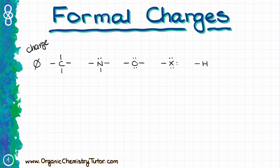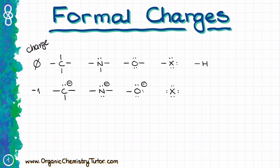In the case where the element has a negative charge, we are going to make one of those bonds into an electron pair. So if the charge is negative one, then on carbon we're going to have one of the bonds become an electron pair. For nitrogen, we'll now see two bonds and two electron pairs. For oxygen, we'll have one bond and three electron pairs. For halogens, we'll have a freestanding halogen with four electron pairs and no bonds, and same thing for hydrogen — it becomes a hydride anion. The negatively charged halide and hydride anion do not have any bonds, so they can only exist as free-floating ions when negatively charged.